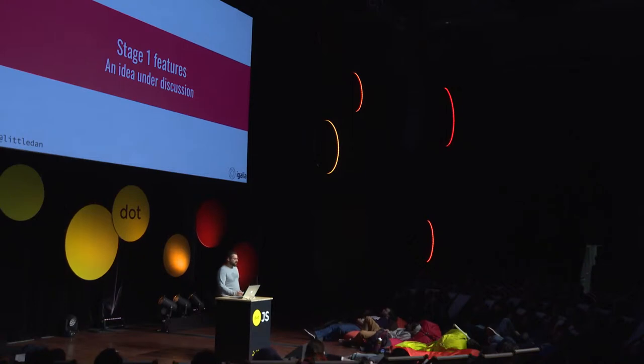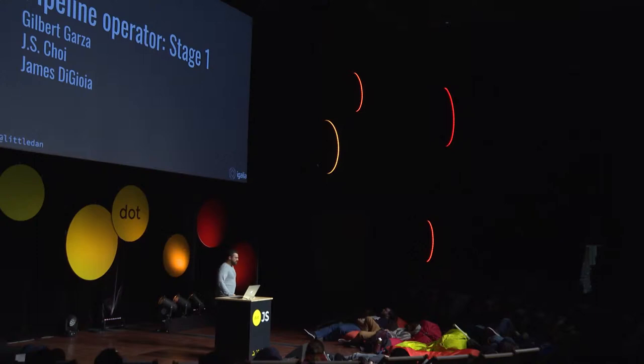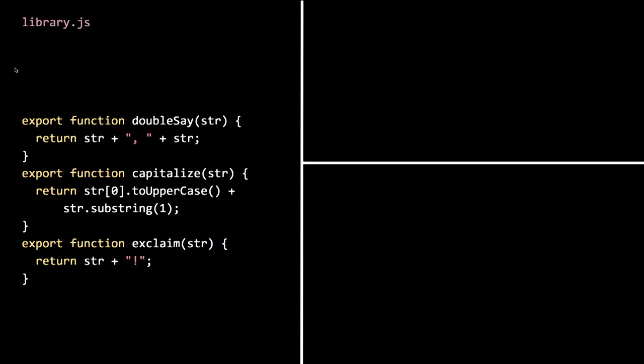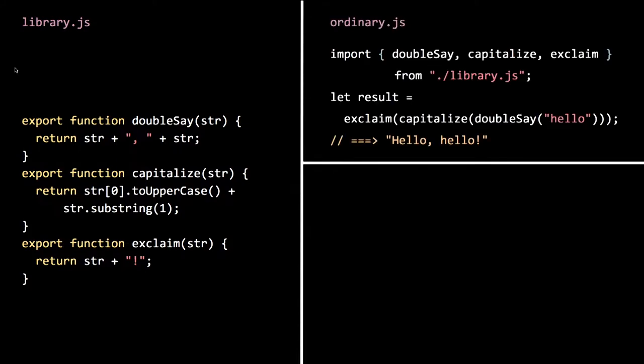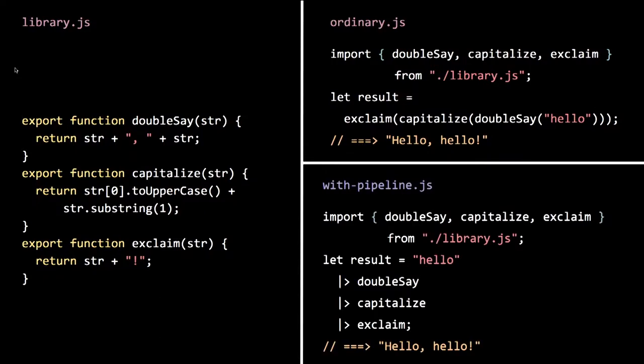Stage one features are ideas under discussion. We have the pipeline operator. Say you have a library of a few functions and you want to call them all on a string in order. One way is nested function calls, but that feels backwards — when you have the string, first you call double, then capitalize, then exclaim — you have to read it right to left. With bigger expressions, it becomes unwieldy. With the pipeline operator, you can just pipe from one thing to the other. Without it, a lot of people want to use method calls for each step, but that doesn't compose well. By using functions that can be exported from modules, the pipeline approach works much better.